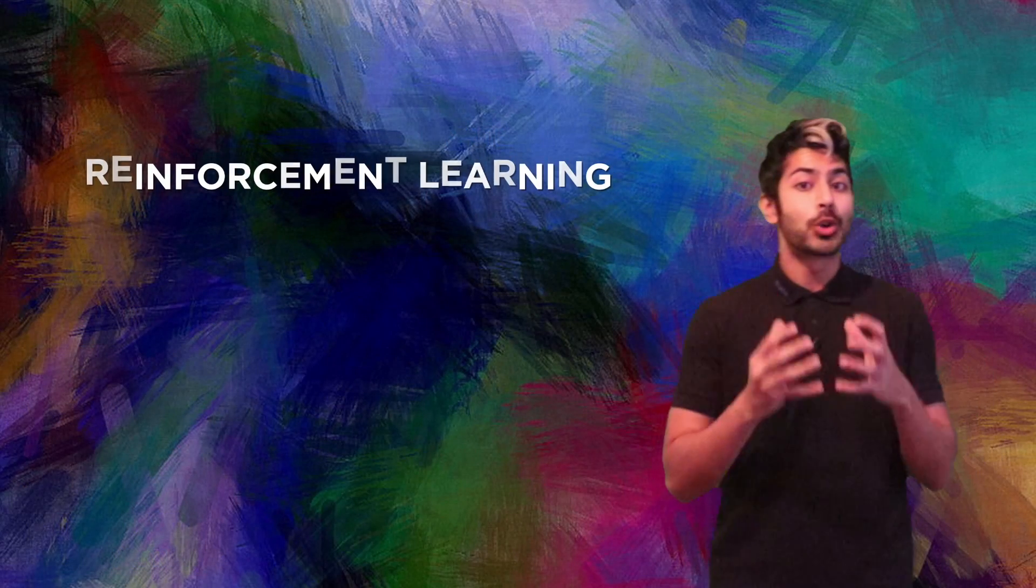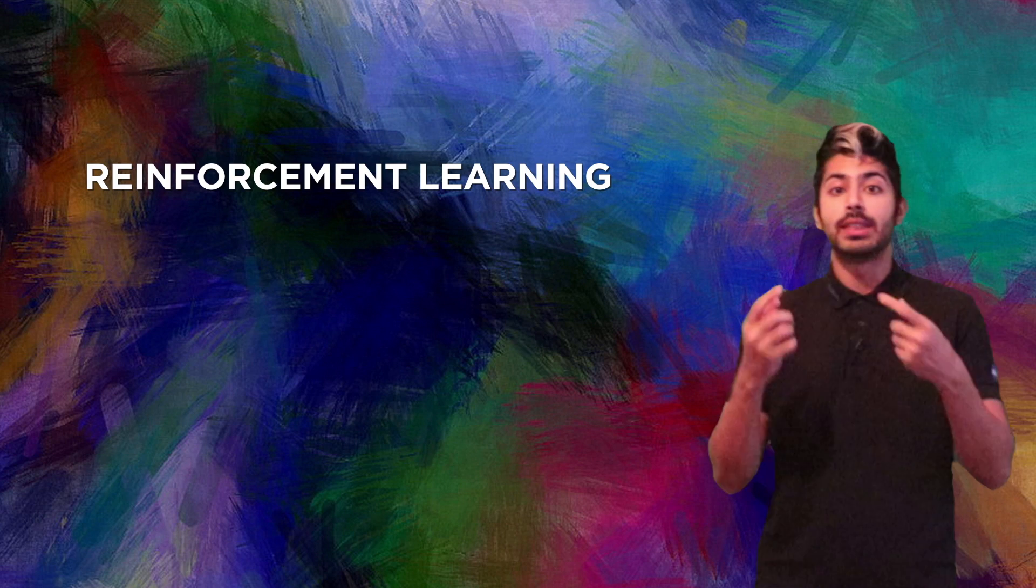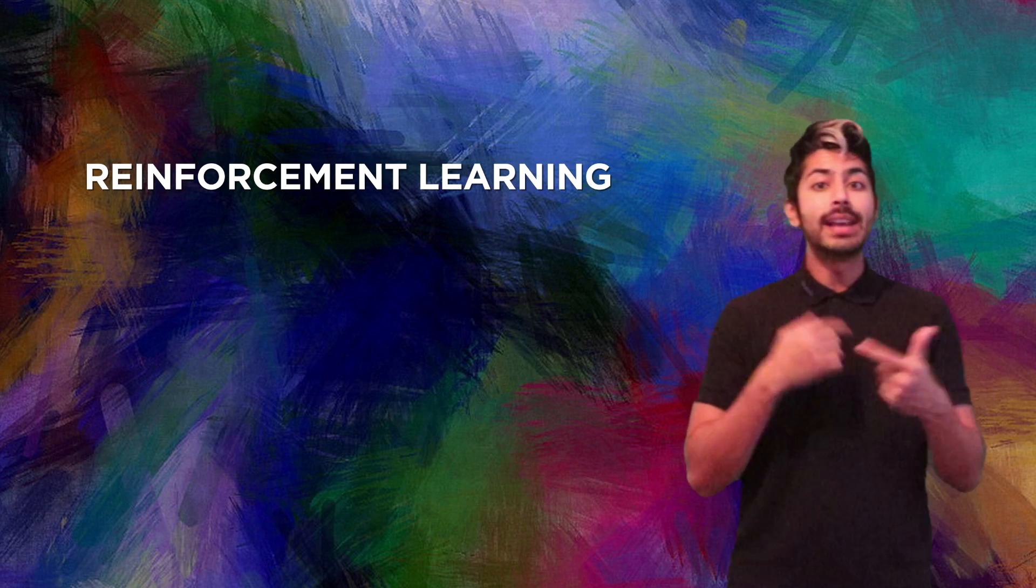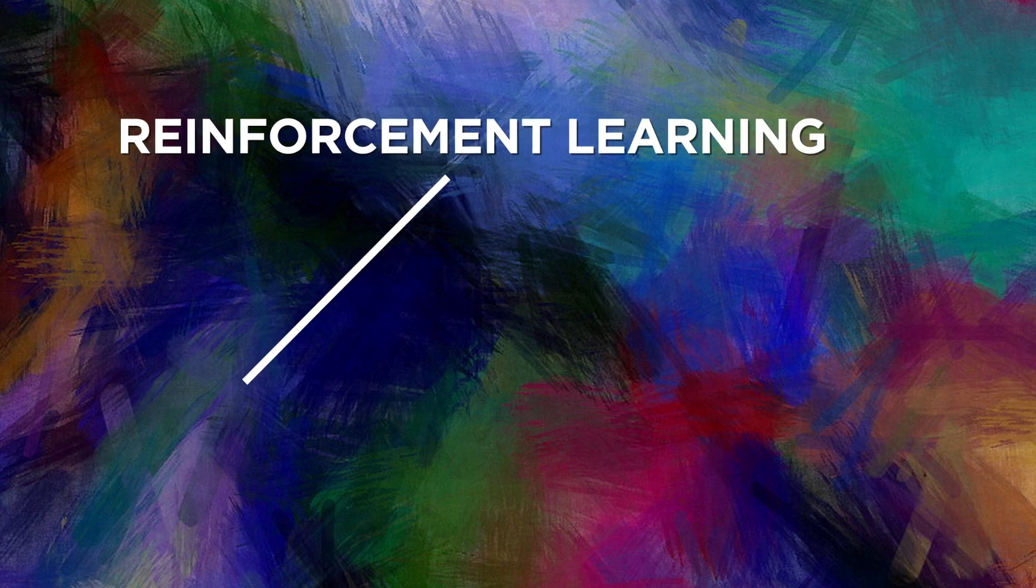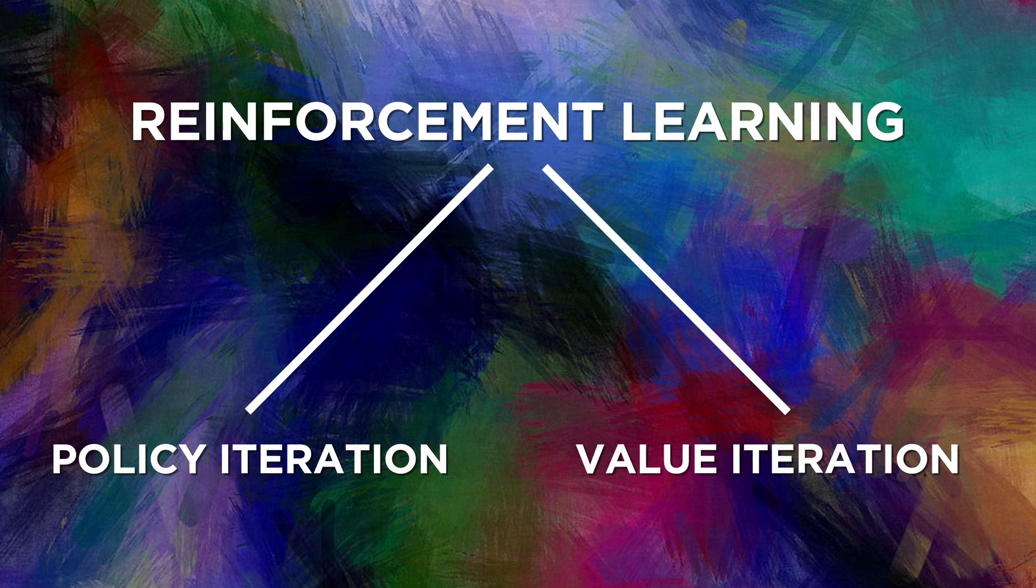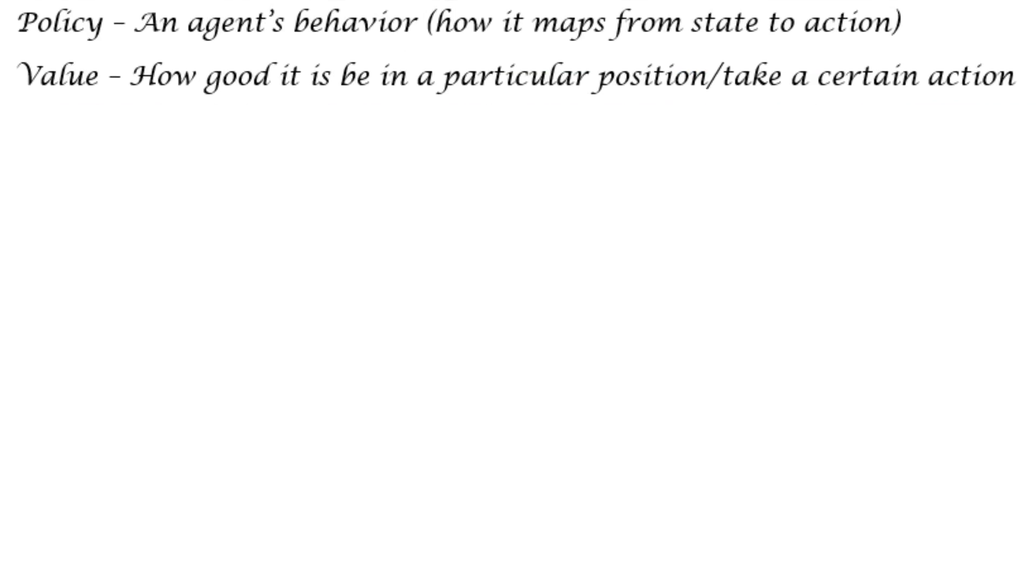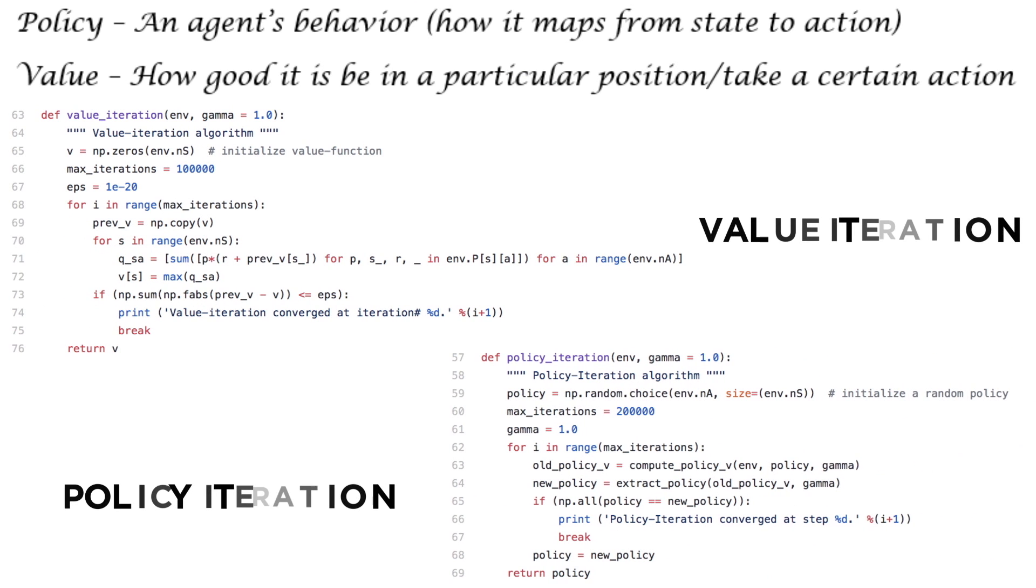So, reinforcement learning is a method of solving this kind of process, and we can break down RL methods that do this into two groups, policy iteration and value iteration methods. Policy methods perform a search in a policy space, and value methods try to estimate the value function. The value function is a function that tries to estimate the long-term utility of either a state or a state action pair, and the agent just selects the argmax action over this function.